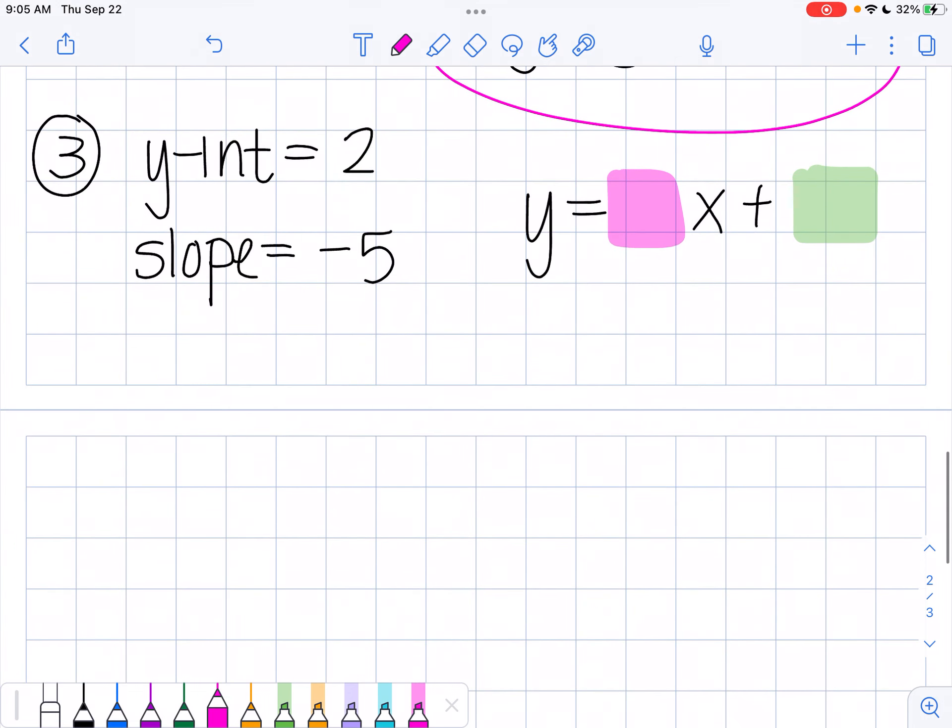Last one. Now this one, they're trying to trick you a little bit. Look at how they give you the information. This one, first they tell you the y-intercept. So the y-intercept here is 2 and my slope is negative 5.